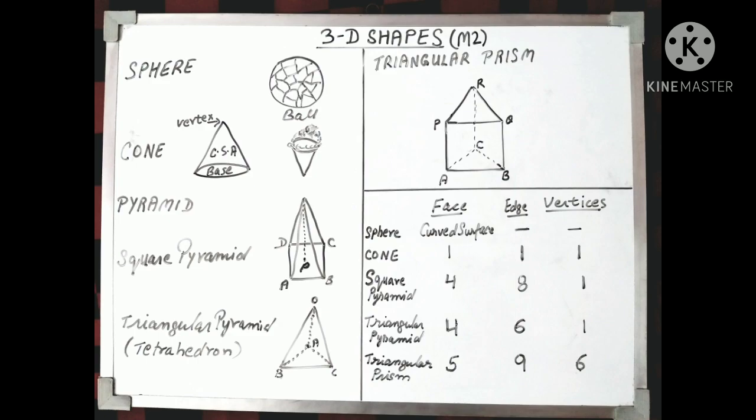We have six vertices, three rectangular faces and two triangular faces, PQR and A, B, C. And very clearly, we can see nine edges are there.